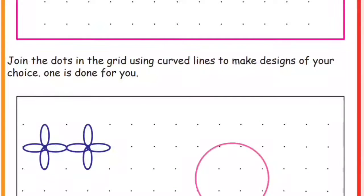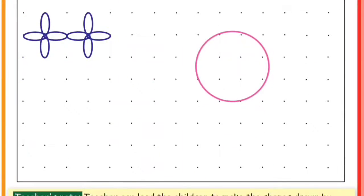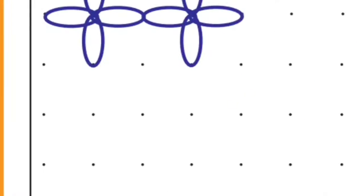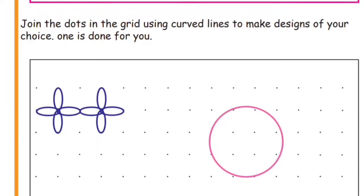Next activity: draw 2D shapes given in the dot grid — one is done for you. You can use dots to draw those shapes, to draw 2D shapes. You can use curved lines to join the dots in the grid and make the design of your choice. You can enjoy the design.